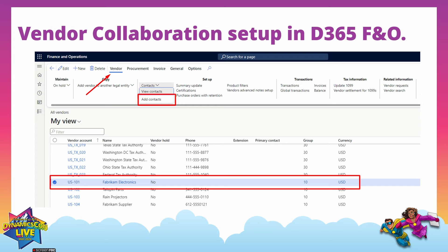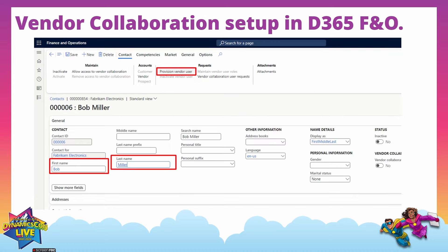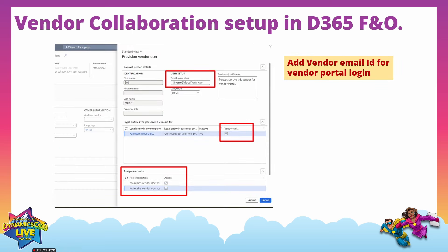To create a new contact, click on the Contacts section, select Add Contact, click New, and create a new contact. The contact is named Bob Miller. Save this option. The next step is to get into Provision Vendor User — click on Provision Vendor User under the Request section.